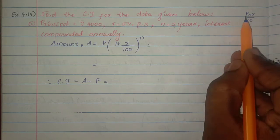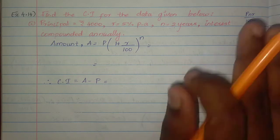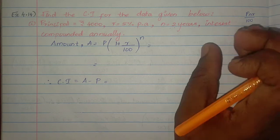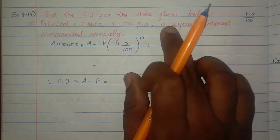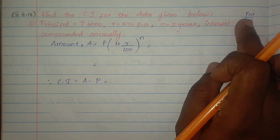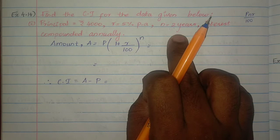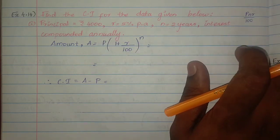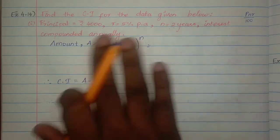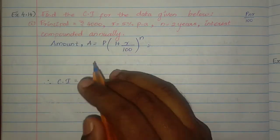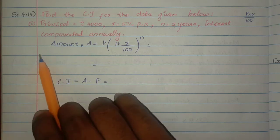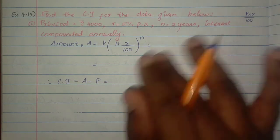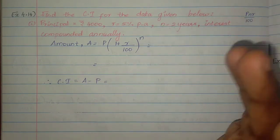The first principal amount is valid for the first period. The second principal amount changes with simple interest added. If it's only 2 years, then the second principal amount is valid for the second year. So compounded annually means yearly once, and for 2 years the principal amount changes each year — first year has one principal, second year has another.